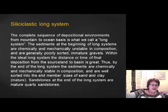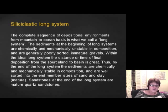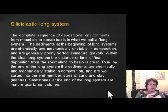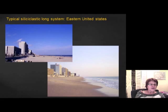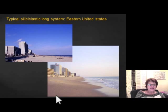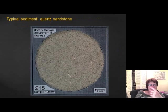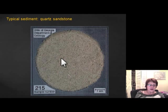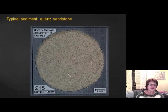Arkose, graywacke, conglomerates, and breccias are very immature. By the time sediment reaches the beach in a long system, it becomes clean, mature quartz sandstone, indicating a relatively large continent. The best example is the eastern United States, from the Appalachians to the beach. Up close, that sand is relatively pure quartz, with only minor garnets or amphiboles — mostly quartz, indicating the source area is far from the beach.